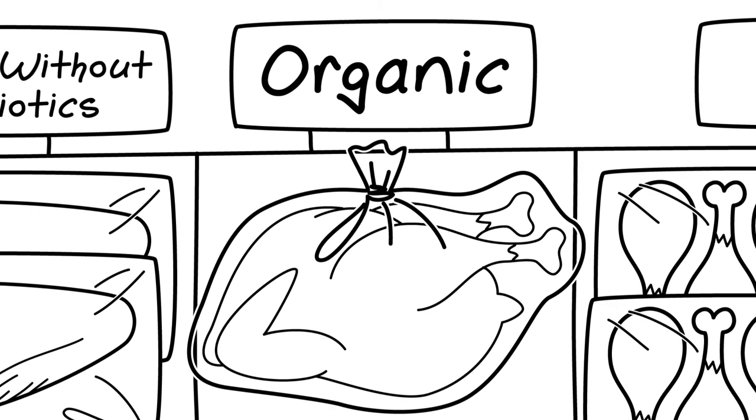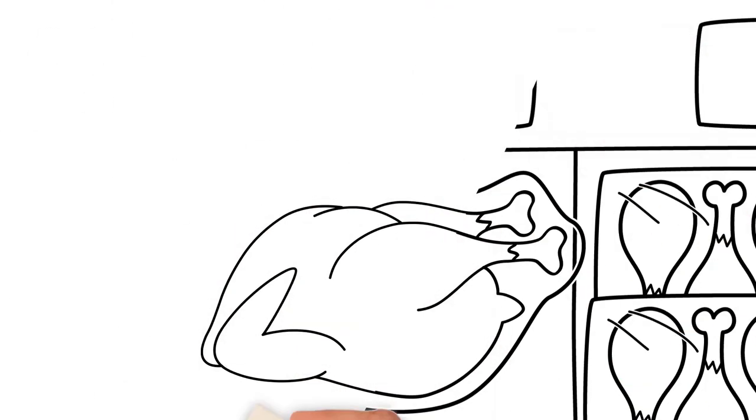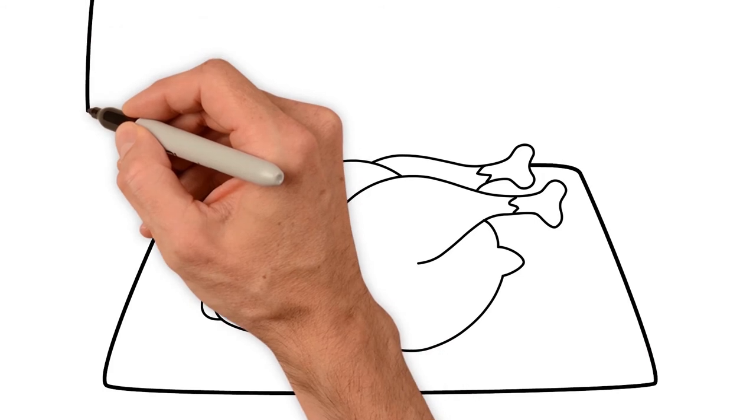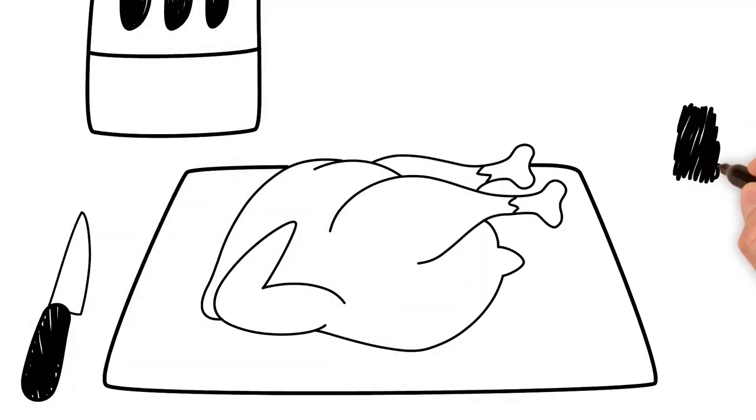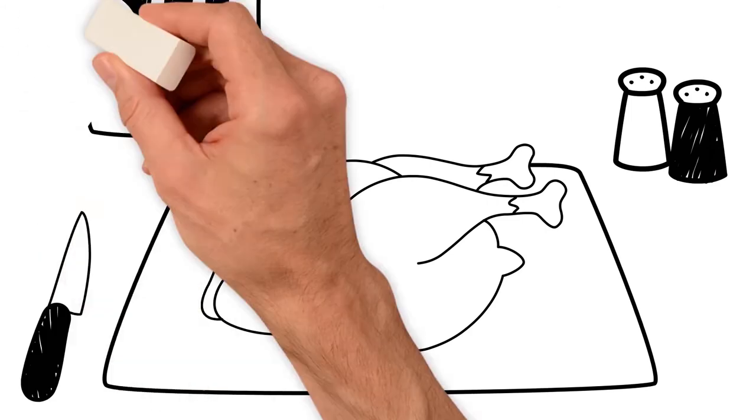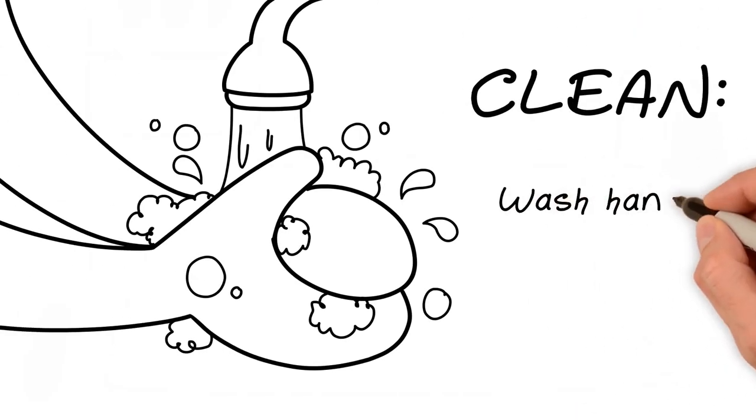But remember, no matter what type of chicken you buy, your role is important too. Good practices in your kitchen can reduce risk of contamination by any bacteria, resistant or not. Just follow the rules you've always known. Clean. Wash your hands and surfaces often. Use soapy water.